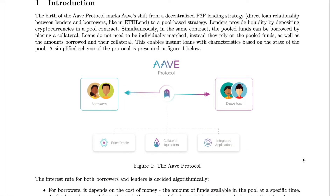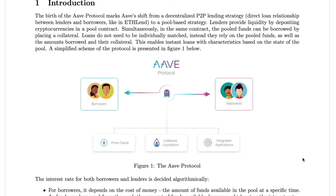Lenders provide liquidity by depositing their cryptocurrencies in a pool contract. In the same contract, the pooled funds can be borrowed by placing collateral. The white paper is very straightforward and educational. At the heart of a lending pool is the concept of a reserve. Every pool holds reserves in multiple currencies, with the total amount in Ethereum defined as total liquidity. A reserve accepts deposits from lenders, and users can borrow these funds granted that they lock a greater value as collateral.